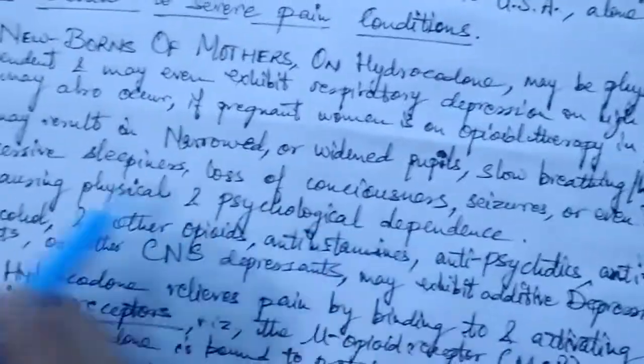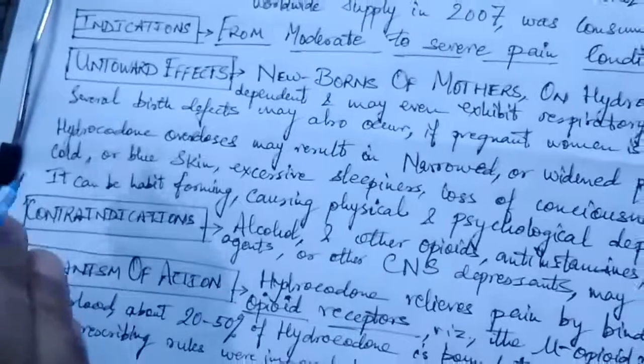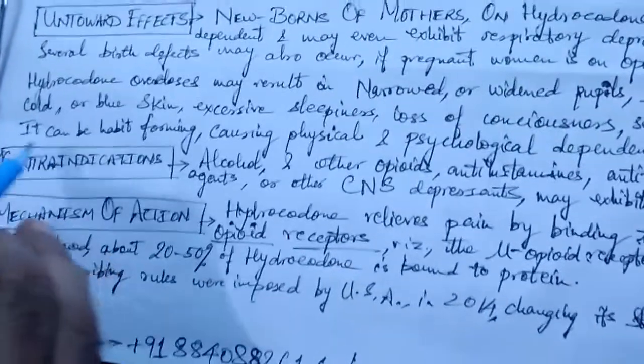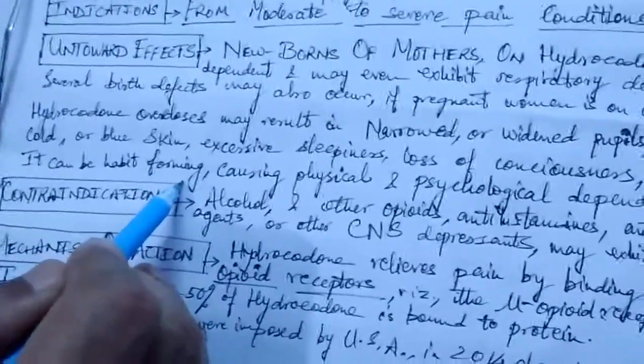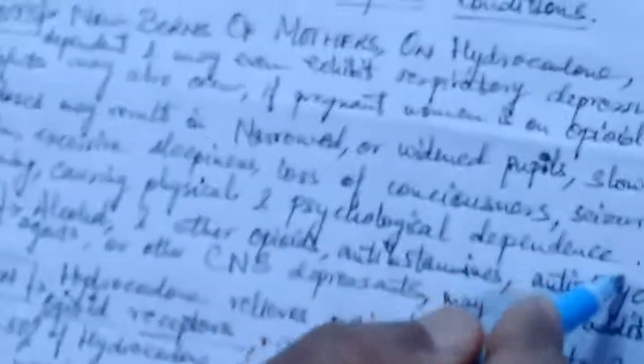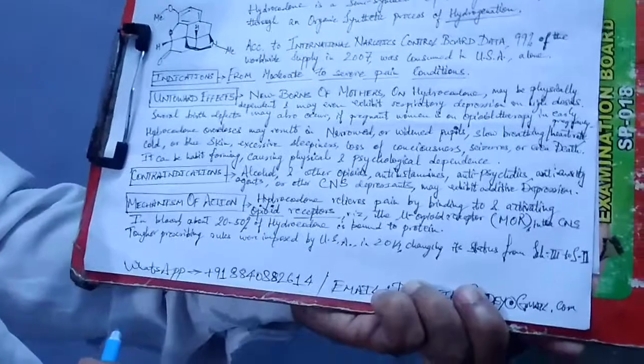Such severe are the untoward effects, and there are even more: hydrocodone can be habit forming. Like all other opioids, hydrocodone is habit forming, causing physical and psychological dependence on the drug. This is a serious adverse effect common to all opioids, and hydrocodone is no exception.